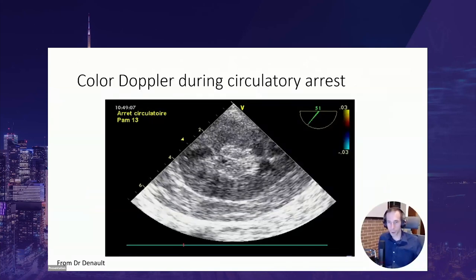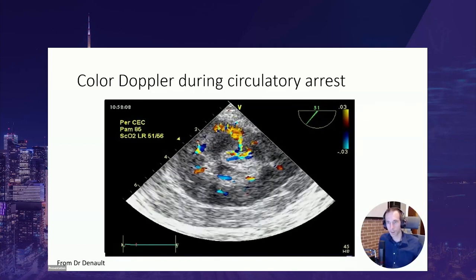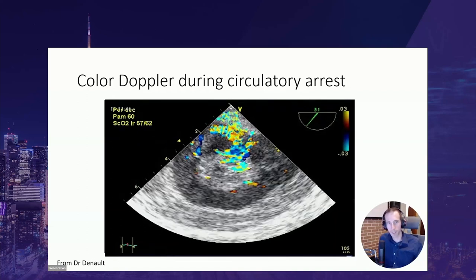This may be different in the context of cardiac surgery. Here is an example from Dr. André Deneau obtained using TEE during cardiac surgery with circulatory arrest. During circulatory arrest there are no signs of perfusion on color Doppler. As mean arterial pressure increases, color Doppler signal returns to the kidney — shown at MAP 60, then MAP 70, then MAP 85, and again at MAP 60. Even at the lower MAP, color Doppler is greater than immediately after circulatory arrest, offering insight into how the kidney is reperfused after intraoperative events.